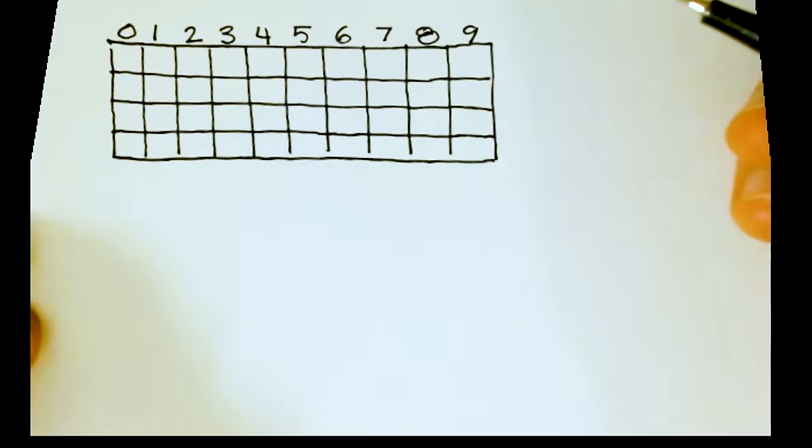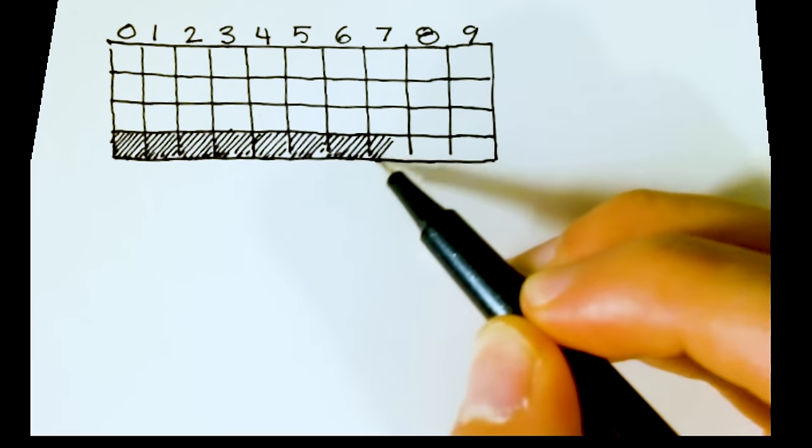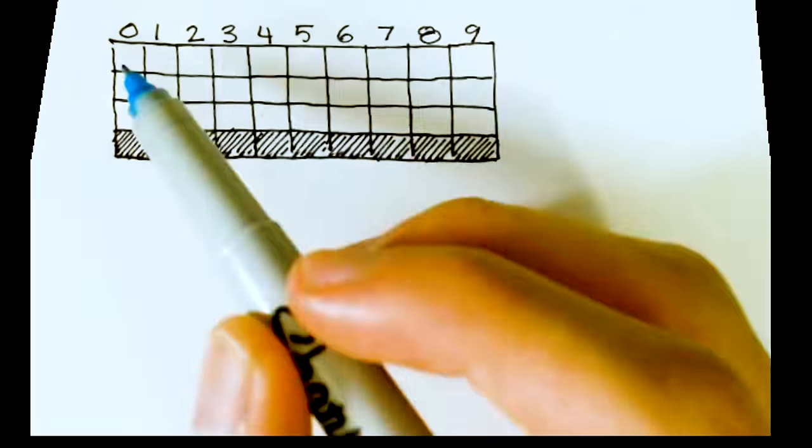NES Tetris loads the current level's color from a table in memory. There are four colors to an NES palette, so the data is grouped into sets of fours.